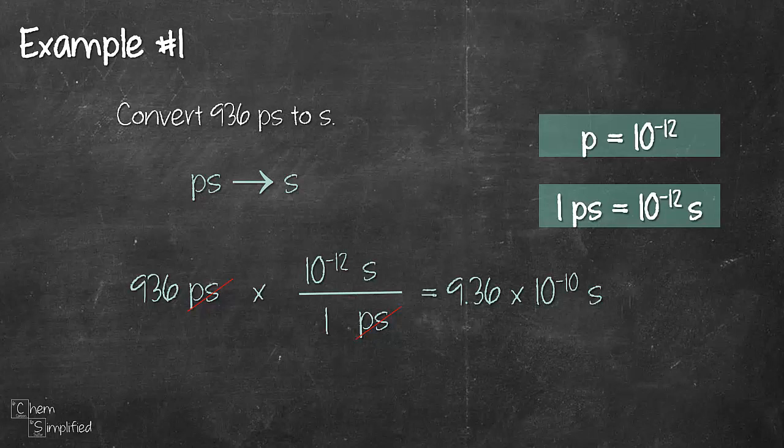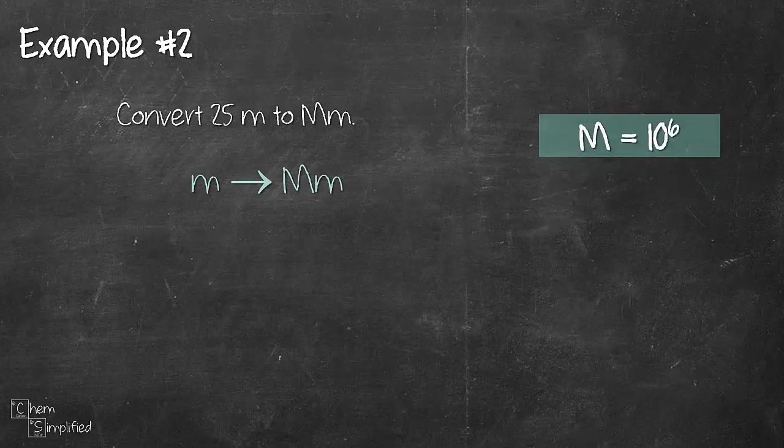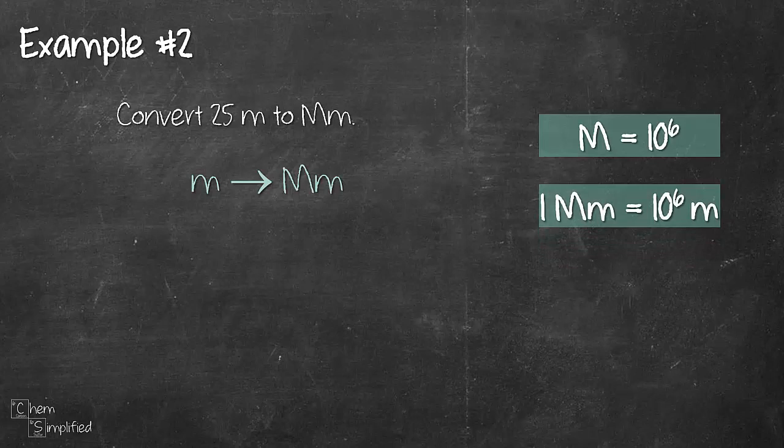Let's try another example. Convert 25 meter to mega meter. So the question is asking us to convert from meter to mega meter. Again from the prefix table mega the value is 10 to the power of 6. So what this means is 1 mega meter is 10 to the power of 6 meter. Meter is the base unit in this case.